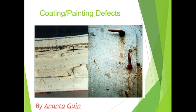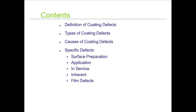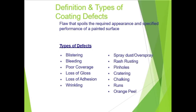Hi guys, welcome to Welding Engineering. We cover all related topics previously on welding and NDT, and we have now added painting and coating topics to this channel. This is the first video on coating and painting. Today's topic is coating and painting defects. The contents will cover: definition of coating defects, types of coating defects, causes of coating defects, and specific defects including surface preparation, application, surface-inherent, and film defects.